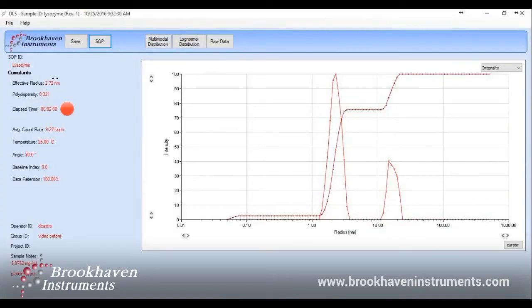Fast-forwarding to the results, they show a radius of 2.72 nanometers for lysozyme. We see multiple populations, a large one at around 15 nanometers. The effective radius is calculated using all populations detected, so this large population is pushing the radius above the known radius of 1.89 ± 0.025 nanometers.